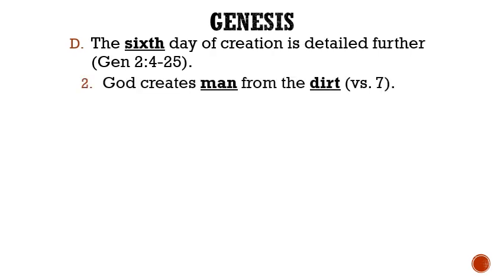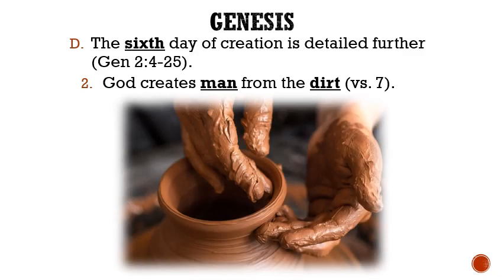Secondly, God creates man from the dirt. Genesis chapter 2 verse 7 says, 'And the Lord God formed man of the dust of the ground and breathed into his nostrils the breath of life, and man became a living soul.' The word formed implies a personal interaction with the Creator. The same verb is used in Jeremiah chapter 18 verse 2 to reference the potter's making of the vessel of clay. Adam was not spoken into existence like other parts of creation; he was specially crafted by the great potter.